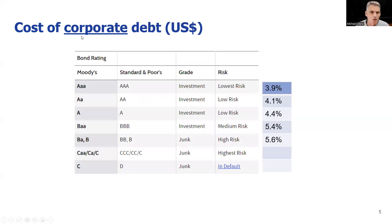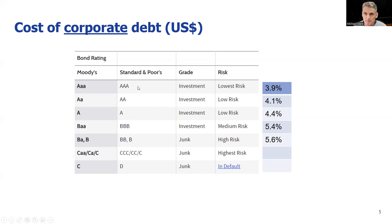Now let's talk about the breakdown of these things. The cost of debt — moving to US dollars here — is often determined by the rating agencies. You've heard of these companies: Moody's, Standard & Poor's, and so on. The triple A's and triple B's they come up with are based on criteria they assess in a company. For example, a triple A rated company might have interest cover of 15 times, whereas a triple B rated company might have interest cover of four times.